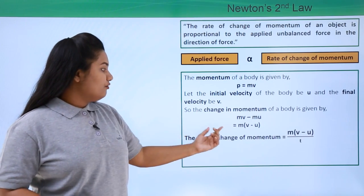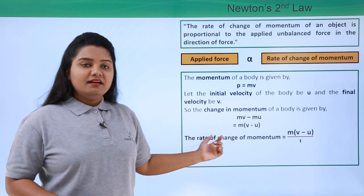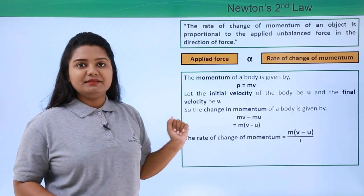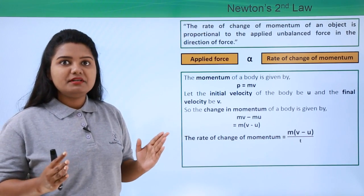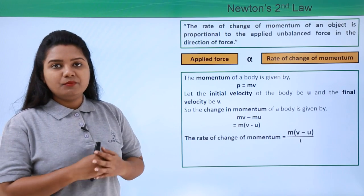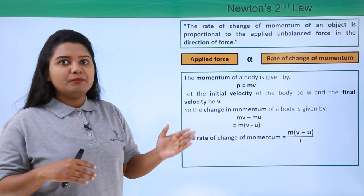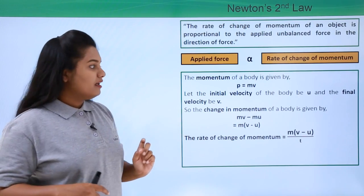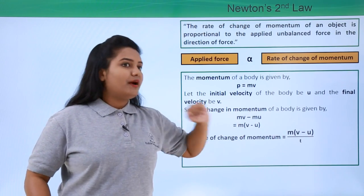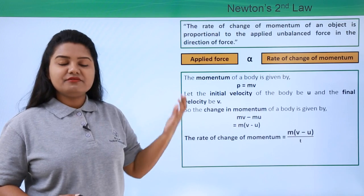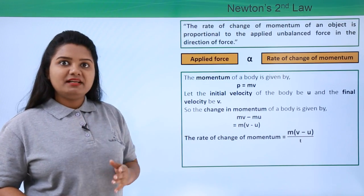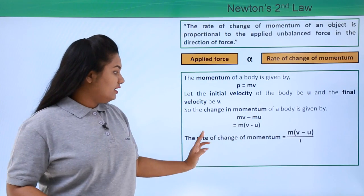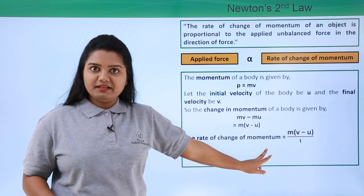The rate of change of momentum will be equal to m(v - u) divided by t, where t is the time taken by the body to change its momentum from the initial momentum to the final momentum — that is, the time required to change its velocity from u to v, or its momentum from mu to mv.